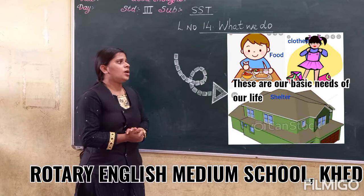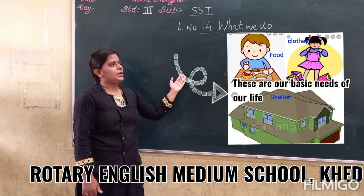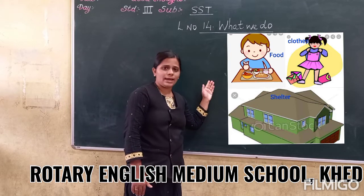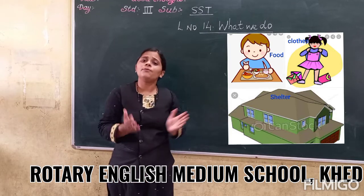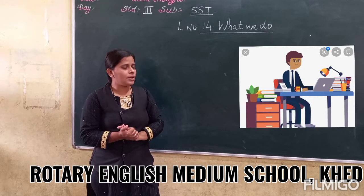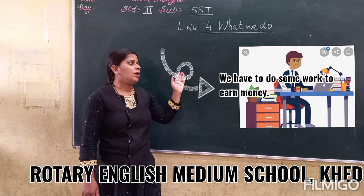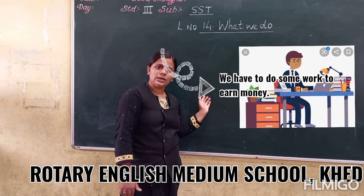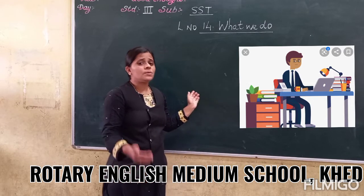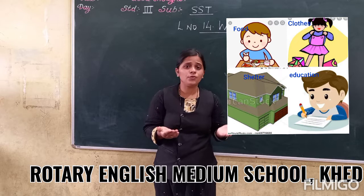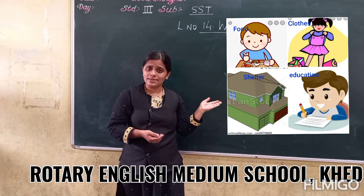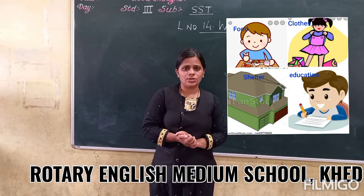We can get all these things only if we have money to buy them. Without money, can you buy all these things? No. So for that, we have to work — we have to do some work to earn money. You might have seen your parents working hard to earn money, so that they can provide you food, clothes, shelter, and education.